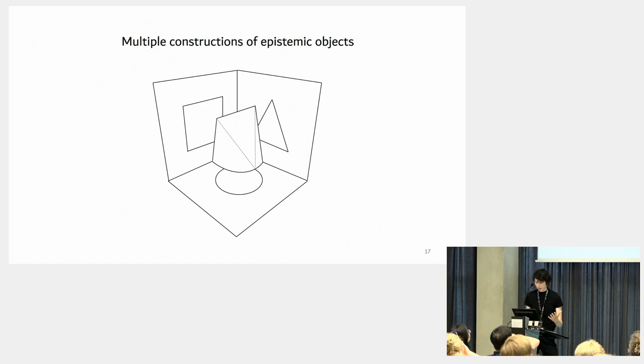But what about the epistemic discrepancies between these constructions of an object? How do we bridge the gap between these objects, technically, intersubjectively, or within our argumentation or within the interpretation? Multi-method object constructions require specific levels of integration that need to be negotiated within our research community.